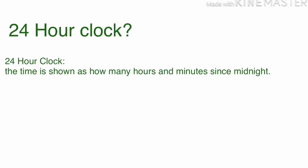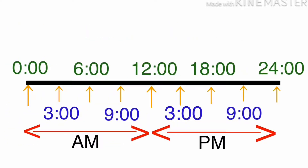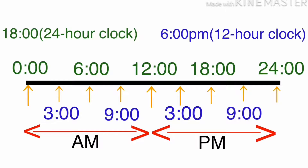What is a 24 hour clock? A 24 hour clock is the time shown as how many hours and minutes since midnight. On the other hand, a 12 hour clock means the 12 hours running from midnight to noon — the a.m. hours — and the other 12 hours running from noon to midnight — the p.m. hours. Let's look at this chart. For example, 1800 in 24 hour clock time is the same as 6pm in 12 hour clock time.